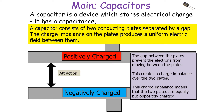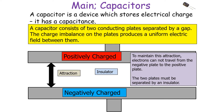It's interesting to note that this charge imbalance means that the two plates — the positive and negatively charged plates — are equally but oppositely charged. The positive charge on the positive plate is equal in magnitude to the negative charge on the negative plate. To maintain this attraction between the plates, electrons cannot travel from the negative plate to the positive plate.